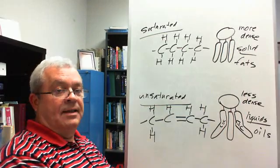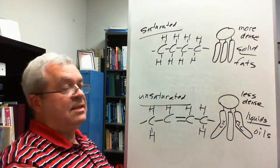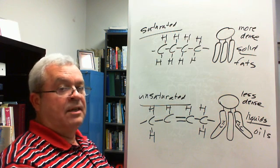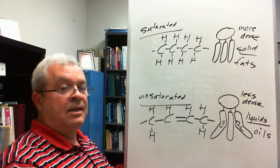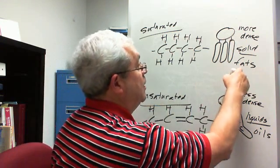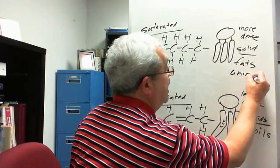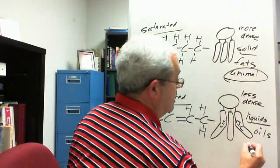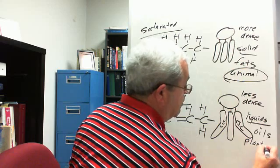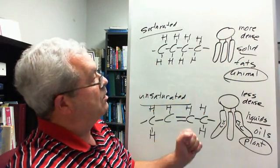And so, finally, what type of organism do these tend to come from? One tends to be a plant product. One tends to be an animal product. Which is which? And, well, let's see. I think these tend to be an animal product. These tend to be a plant product. Your vegetable oils, there's bacon fat, would be up here. Vegetable oils down here tend to be a plant product.